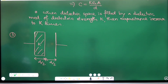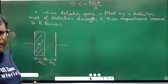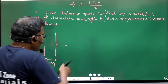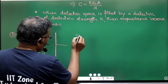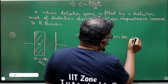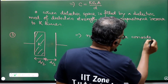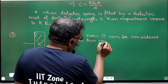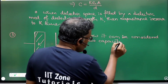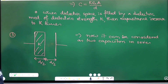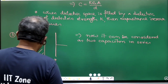It is not simply that because the dielectric covers half the thickness, the capacitance increases to half of k times. Instead, this arrangement can be considered as two capacitors connected in series.